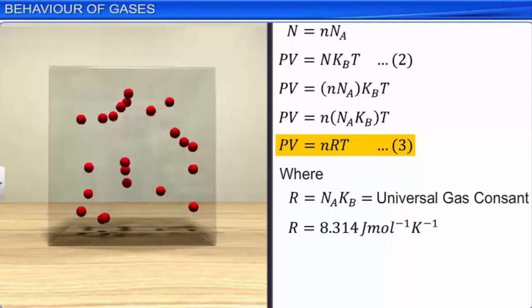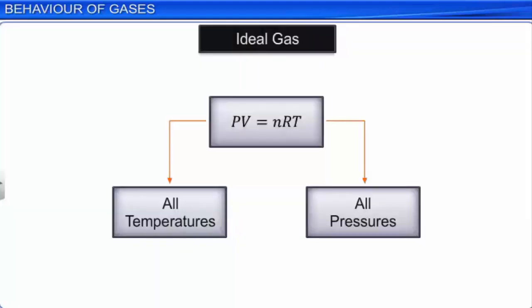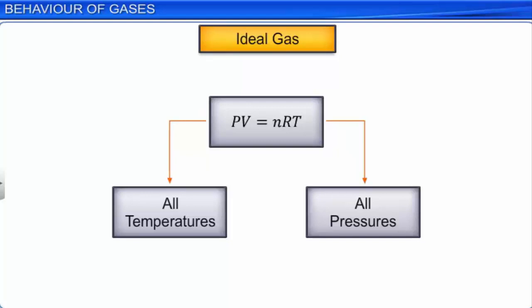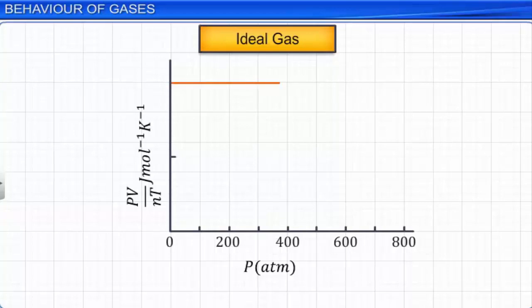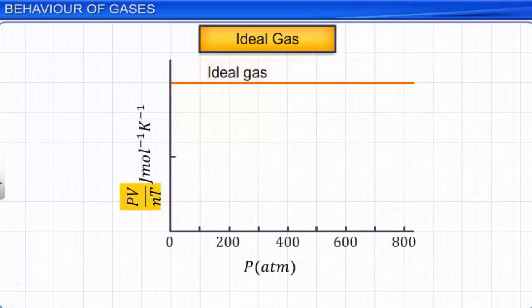A gas that satisfies the ideal gas equation at all temperatures and pressures is defined as an ideal gas. The concept of an ideal gas is merely a theoretical concept — in practice, there is no ideal gas. If we plot a graph by taking pressure on the x-axis and PV/nT on the y-axis, the graph is a straight line parallel to the x-axis for an ideal gas. That is, the value PV/nT is constant even when pressure changes.